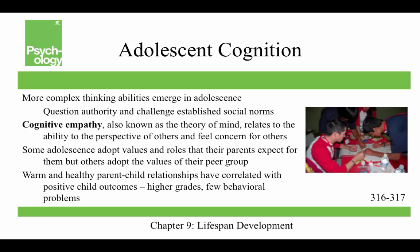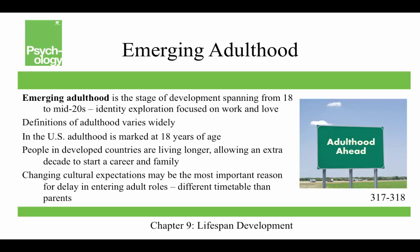Adolescent cognition: more complex thinking emerges as adolescents question authority and challenge established social norms. They increase their cognitive empathy — theory of mind — and are able to see the perspective of others and feel concern for them. Some adolescents adopt the values their parents expect, while others adopt the values of their peer group, making friends during adolescence very important. Warm and healthy parent-child relationships are correlated with positive outcomes like higher grades and fewer behavioral problems, and research shows kids actually want to get along with their parents.